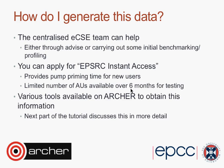So how can you generate this data? Some of you may already have it, but if not, the centralized team can help — we can offer advice and carry out some benchmarking and profiling for you. There's also an option to apply for EPSRC instant access: a relatively low overhead way of obtaining a small amount of time on Archer for what's called pump priming — to prepare codes or prepare for a proposal. You could apply for instant access to have some time over six months to do testing, profiling, and benchmarking to obtain this information. My colleague Mark will now tell you more about actually getting this information on Archer.